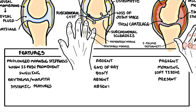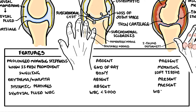Over the joint in osteoarthritis, there is absent erythema — redness and warmth — while in rheumatoid arthritis, it is common to have redness and warmth during a flare. Systemic features are absent in osteoarthritis, whereas in rheumatoid arthritis they can have other features such as fevers, red eyes, and fatigue. When fluid is taken out of a joint in osteoarthritis, there is typically less than 2,000 white cells per area, whereas in rheumatoid arthritis the white cell count is greater than 2,000 during a flare.